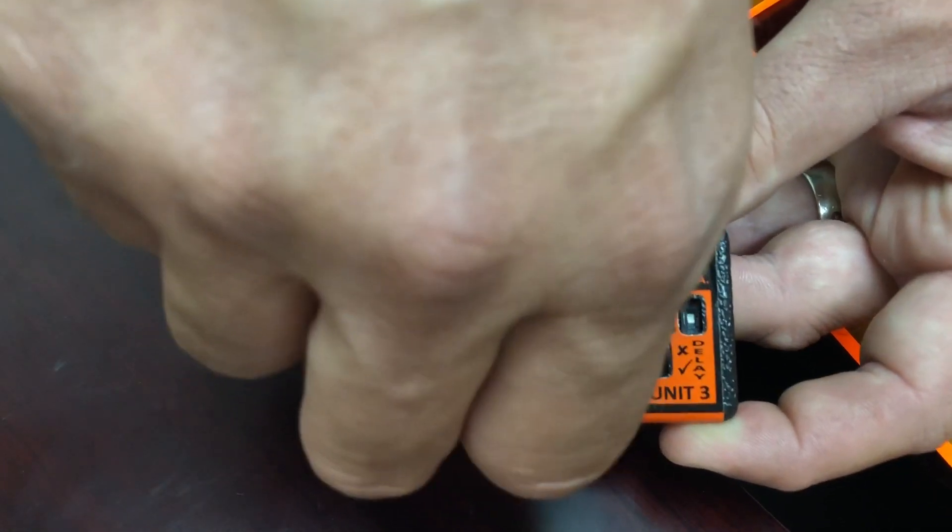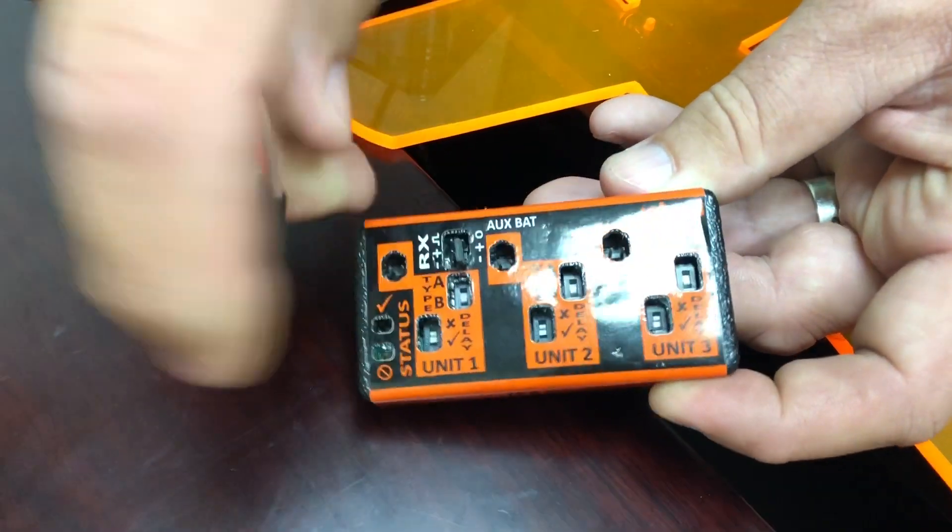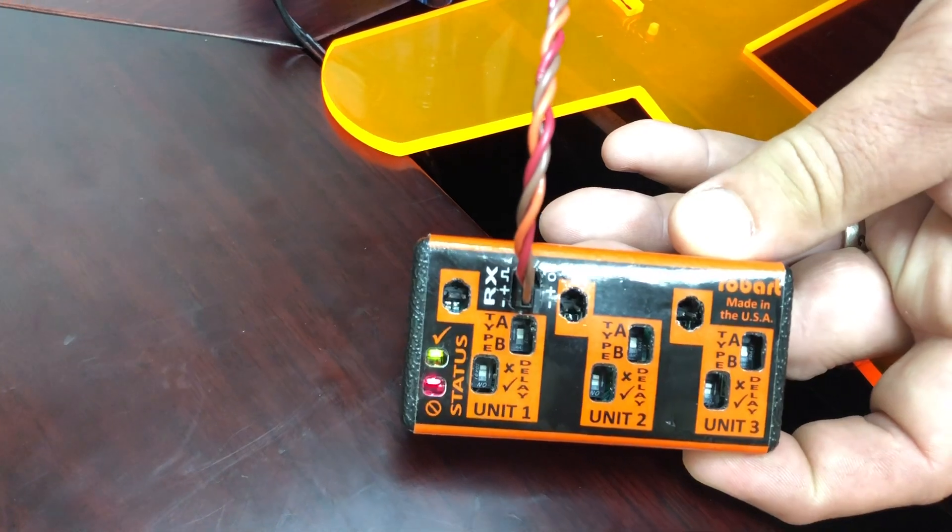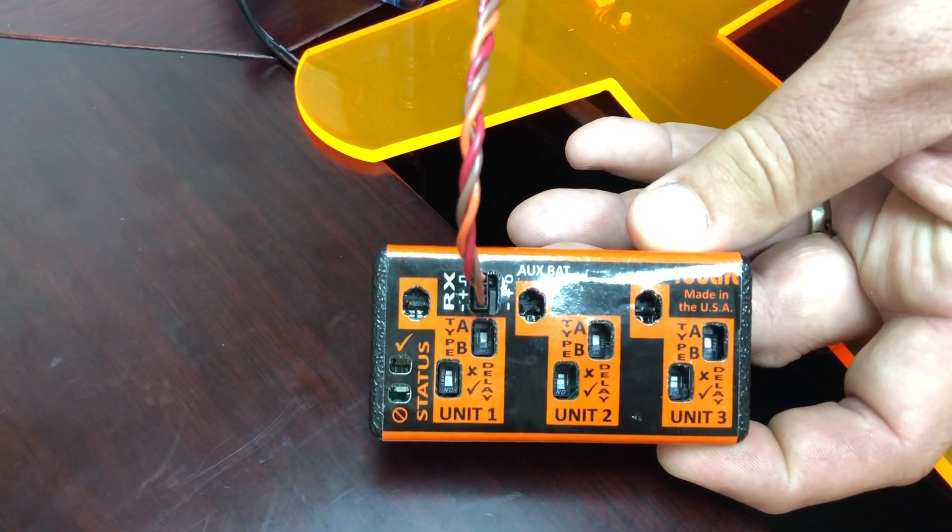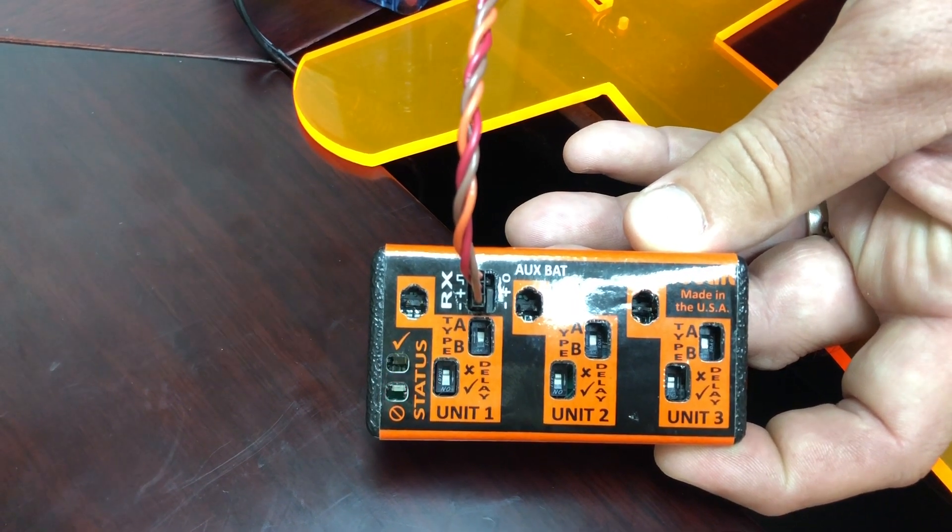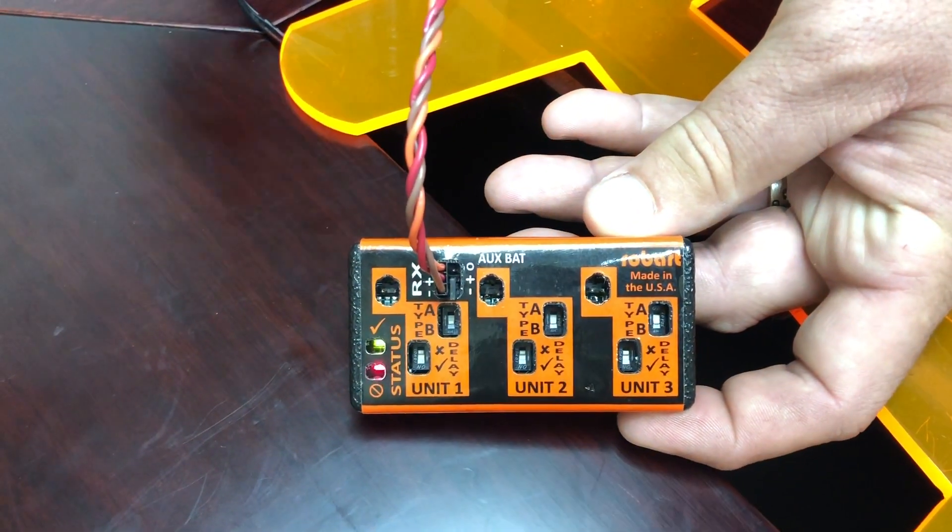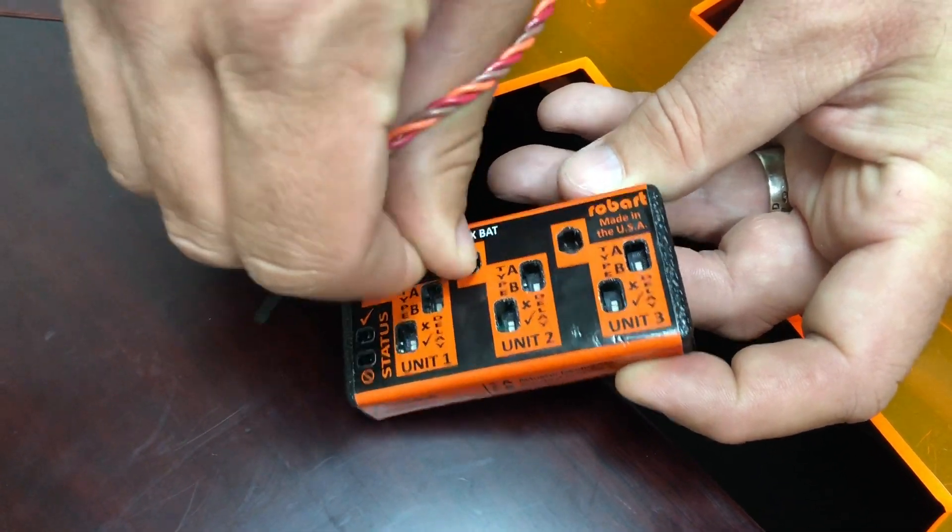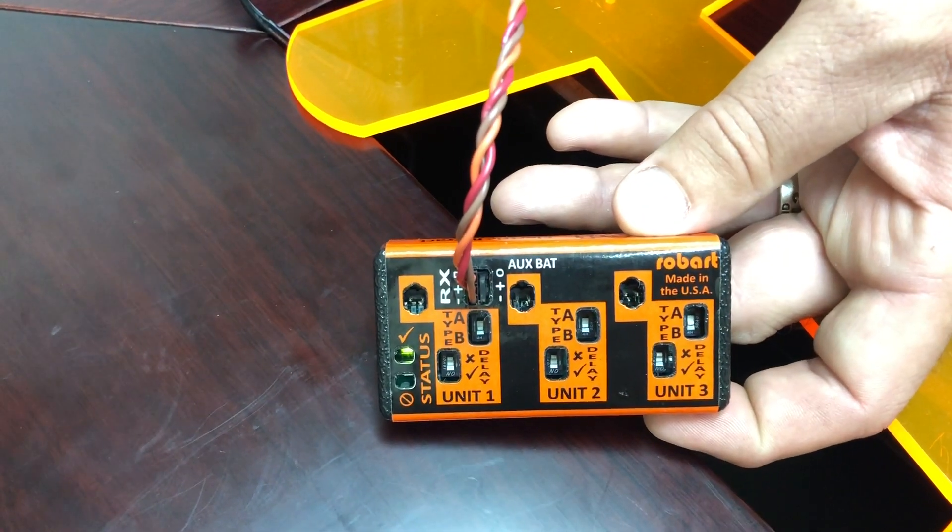If you put the jumper onto the plus and the minus, now you're going to get a blinking green and a blinking red light. All right, so that's your indication that you have the jumper in the incorrect spot. Now you can see I have a green light.